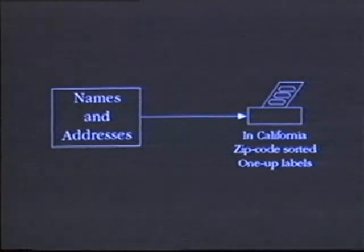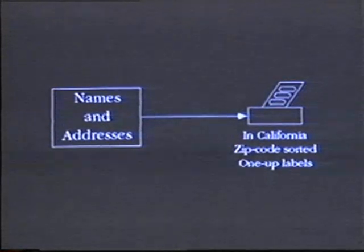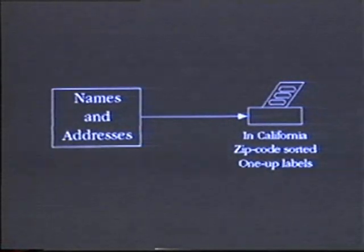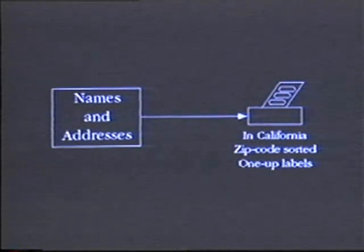For example, consider this common application: you have a series of names and addresses stored in a file, and what you need are some of the names in that file printed on labels so you can paste them onto envelopes and send them to somebody. To make this more realistic, let's assume that you need the names of the people in California.